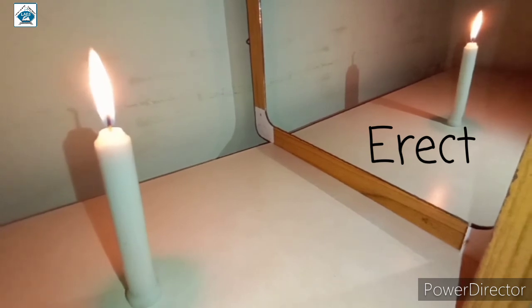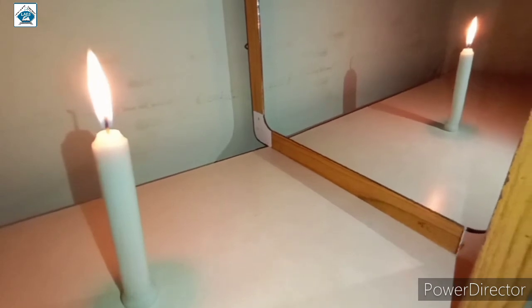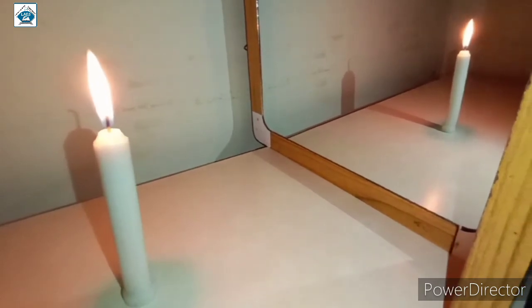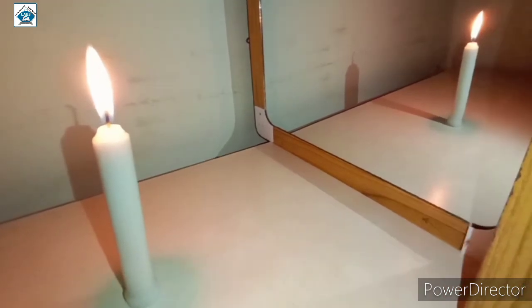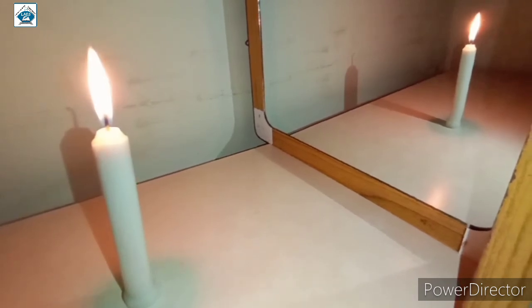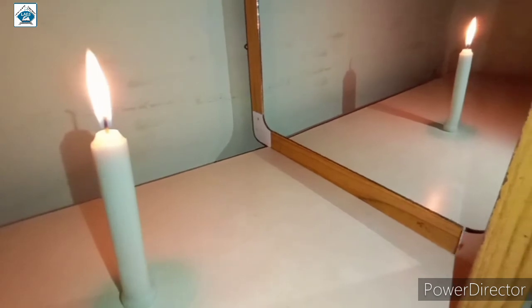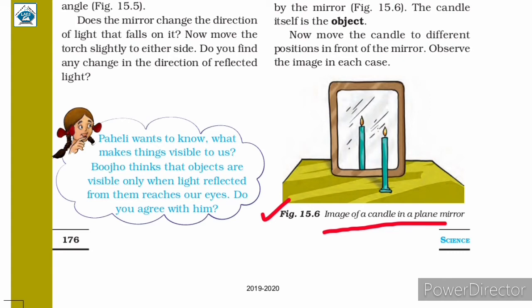The size of the image formed by the plane mirror is the same as the size of the object. We can conclude that an image formed by a plane mirror is erect and is of the same size as the object — here the object is the candle. The image is upright, with the flame appearing on top of the candle as in the object.